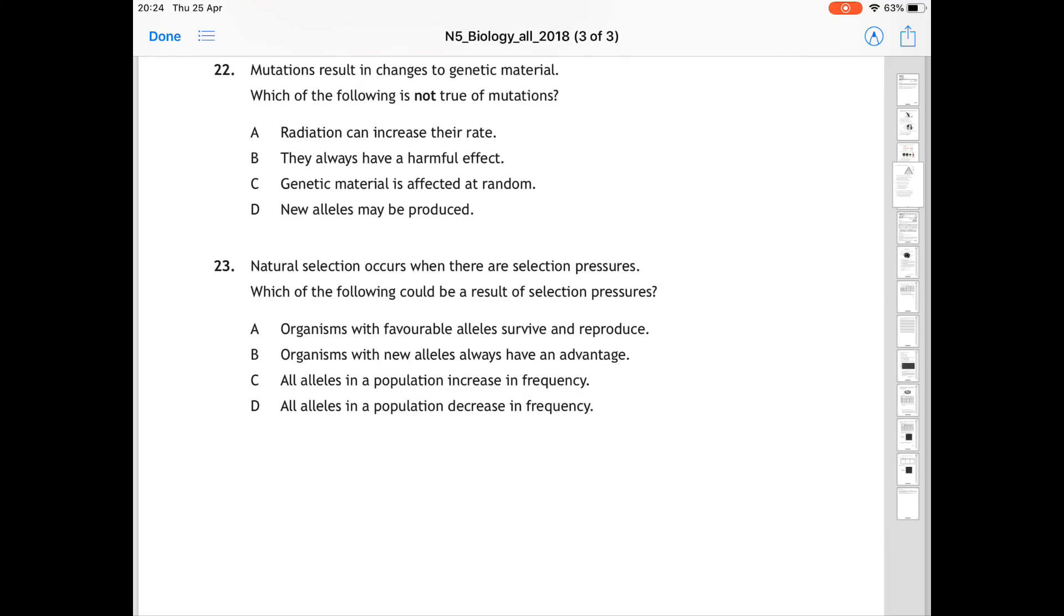For question 22, mutations result in changes to genetic material. Which of the following is not true of mutations? So again, we're looking for the incorrect answer. Radiation can increase their rate. That is true. Genetic material is affected at random. That is true. New alleles may be produced. Absolutely true. But for B, they always have a harmful effect. That is incorrect. It could be harmful. It could be beneficial. So B is incorrect. So 22 is B.